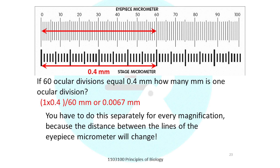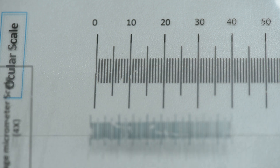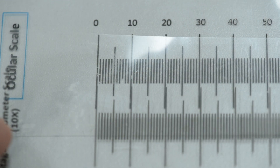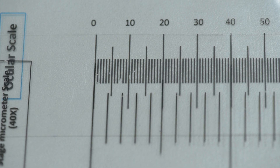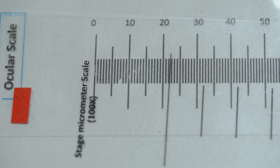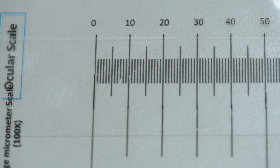This 0.4 mm overlaps with 60 divisions on the eyepiece micrometer. Therefore, if 60 ocular divisions equal 0.4 mm, you can calculate one ocular division by dividing 0.4 mm by 60. After calibrating the ocular micrometer, you need to repeat this process for each of the objective lenses separately, because when you change the objective lens, the number of overlapping divisions changes according to the objective used.